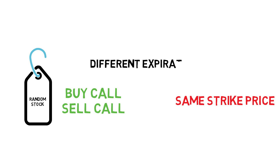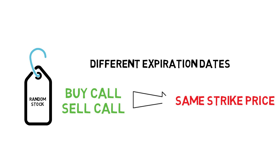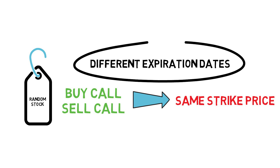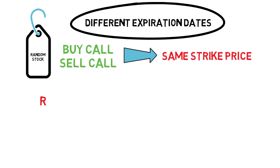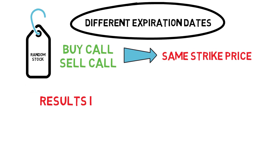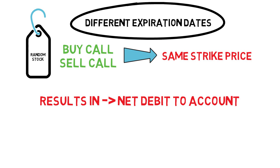In essence, calendar spreads all have the same foundation. However, where it gets confusing is what their goal is. A long calendar spread, often referred to as a time spread, is the buying and selling of a call option or the buying and selling of a put option with the same strike price but having different expiration months. If a trader is selling a short dated option and buying a longer dated option, the result is a net debit to the account.